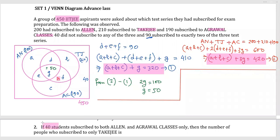Second question: if 40 students subscribe to both LN and Agarwal Classes only — that means region 'e' equals 40. The question then asks for the number of people who subscribe to only TakeG, which is region 'b'.